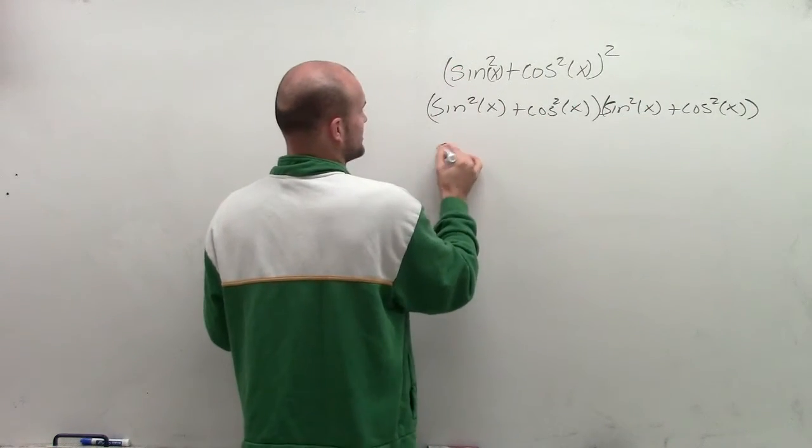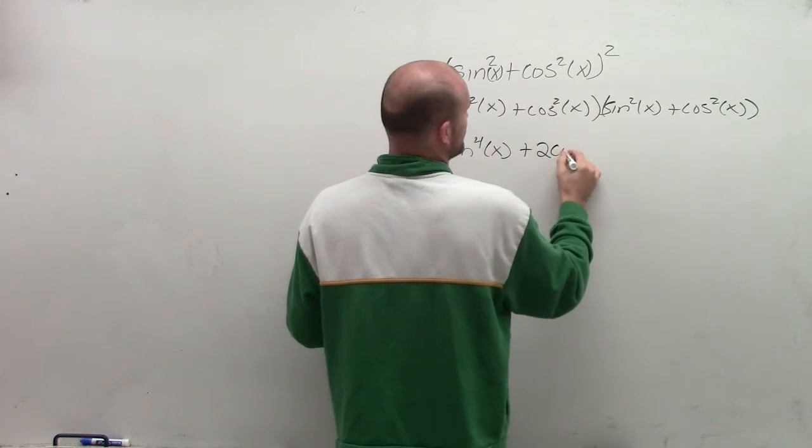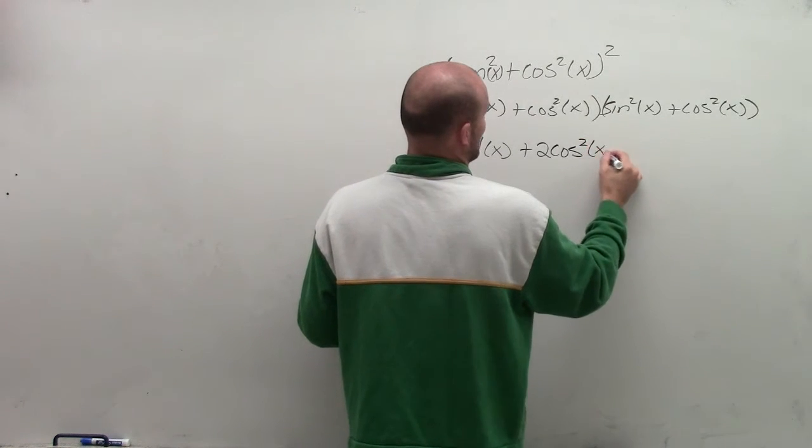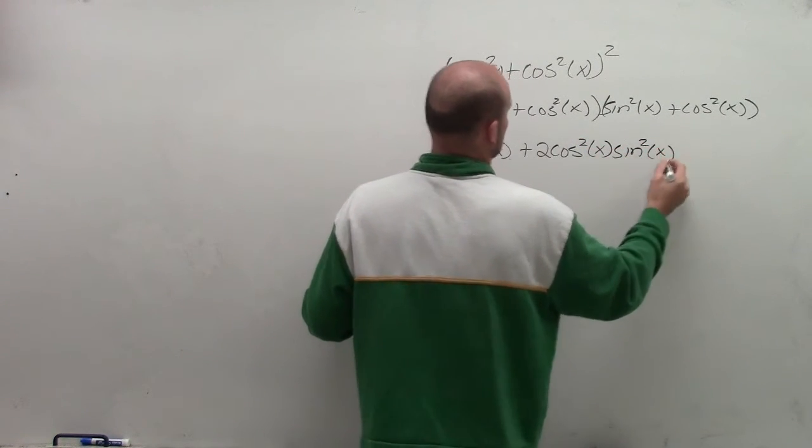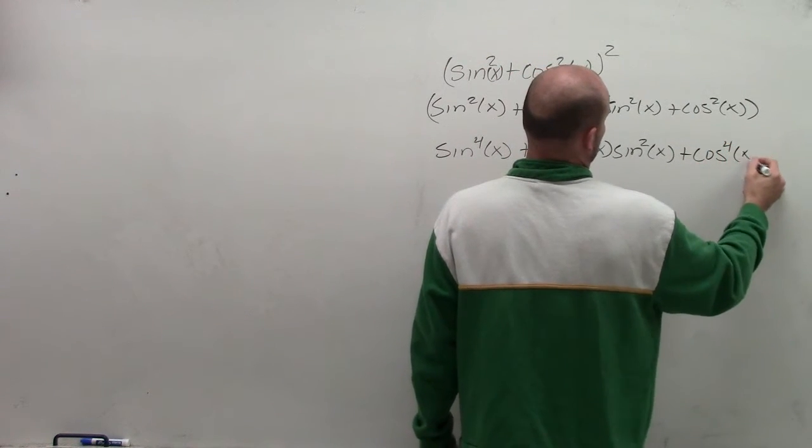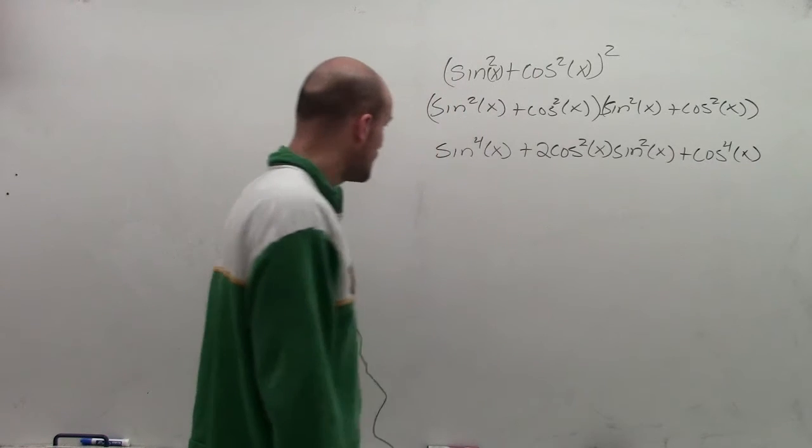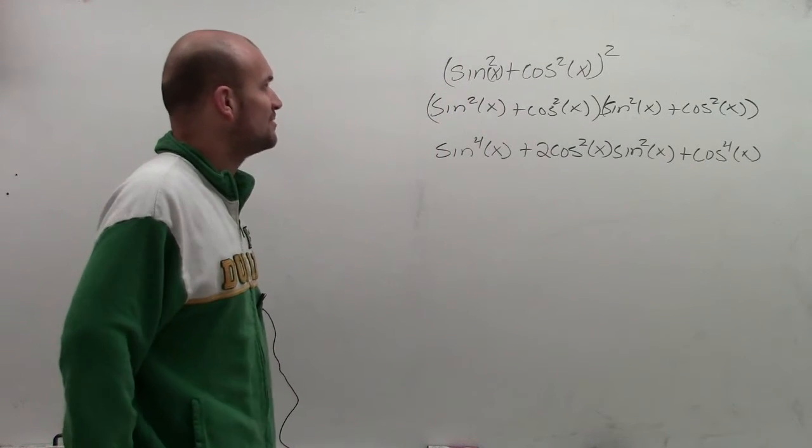Sine squared times sine squared is going to give me sine to the fourth of x plus 2 cosine squared of x sine squared of x plus cosine to the fourth of x. Now to go ahead and simplify this.